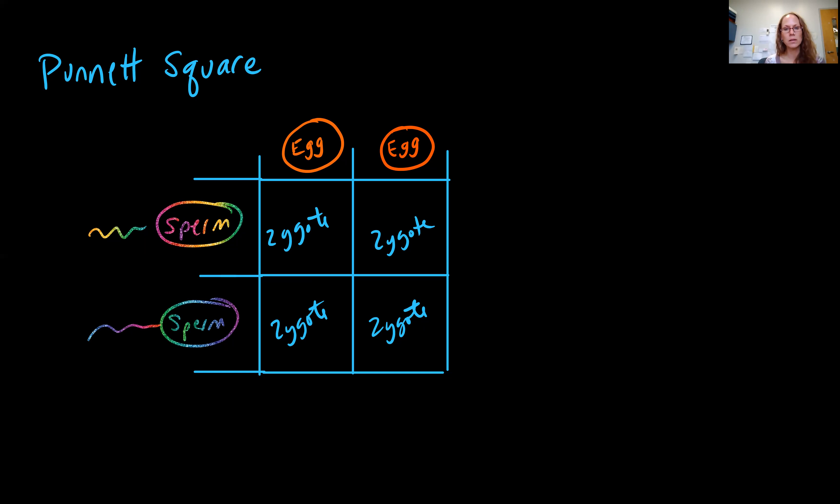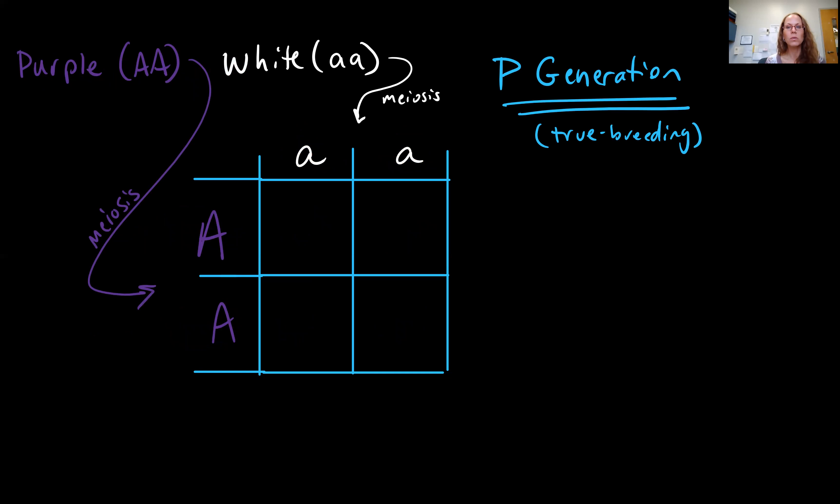The middle boxes of your Punnett square represent your possible fertilized eggs. So, when the sperm meets with the egg, what kind of a zygote might you see there? So, let's do our P generation cross. P generation crosses, by definition, are true breeding crosses.